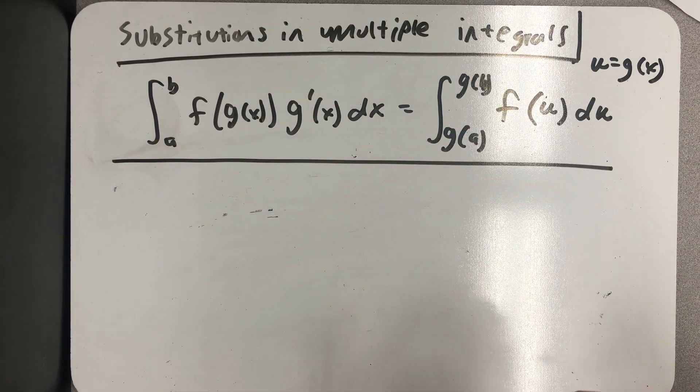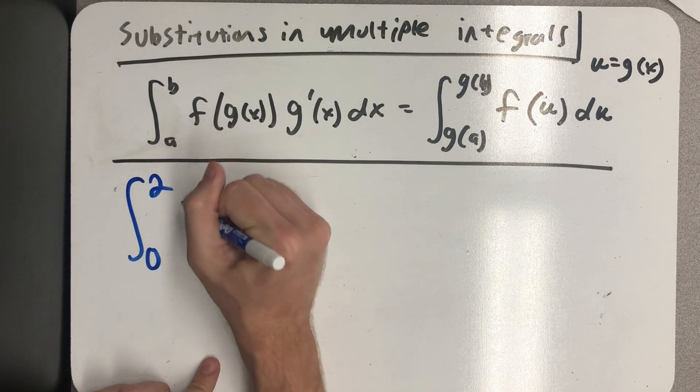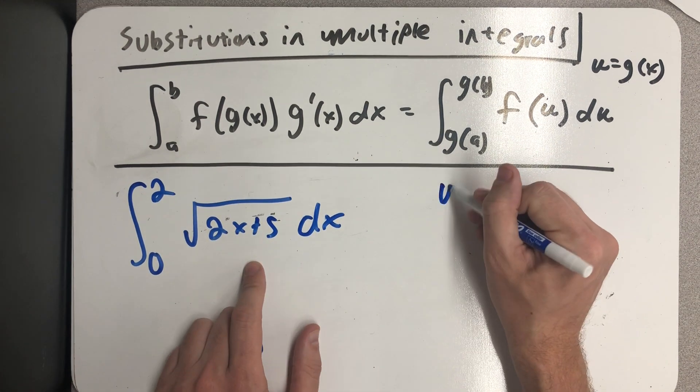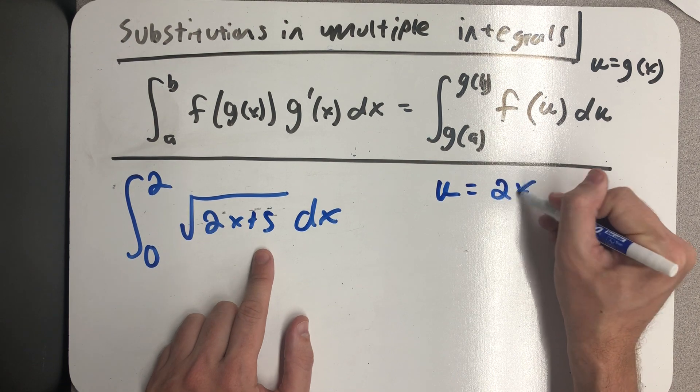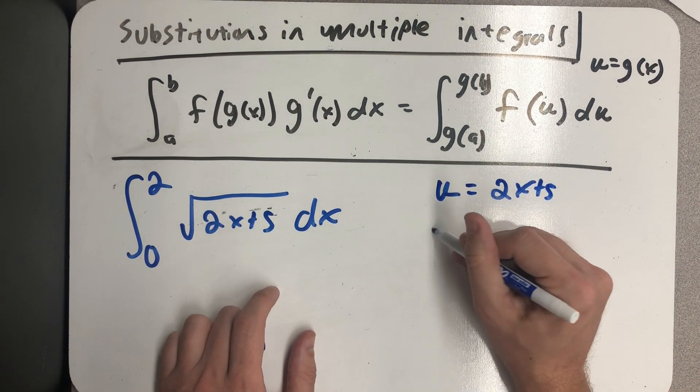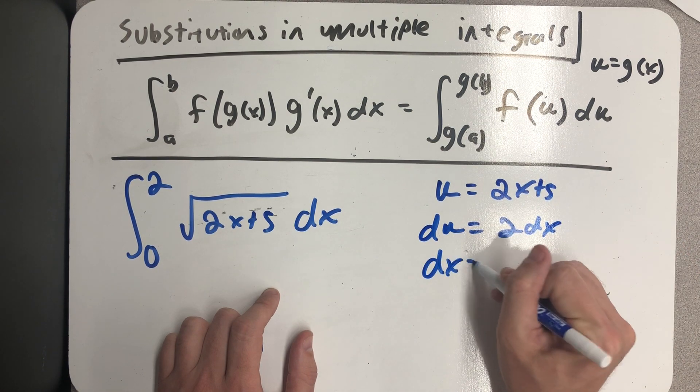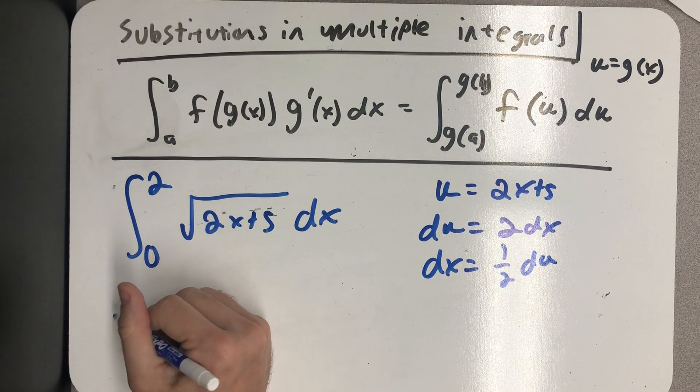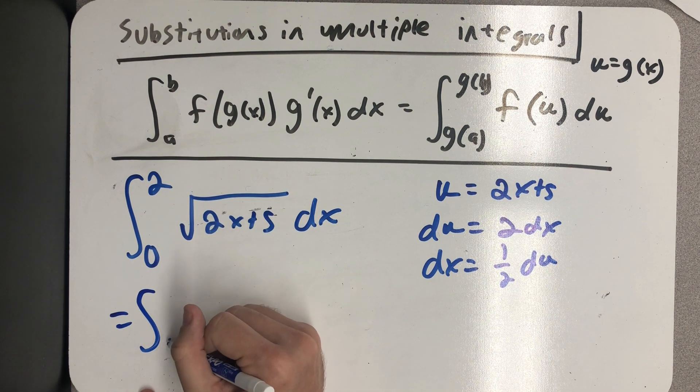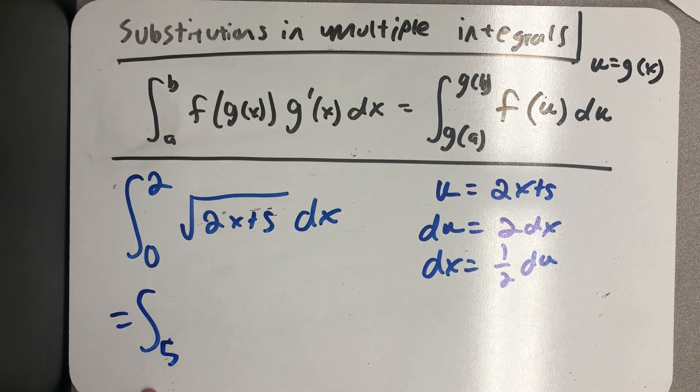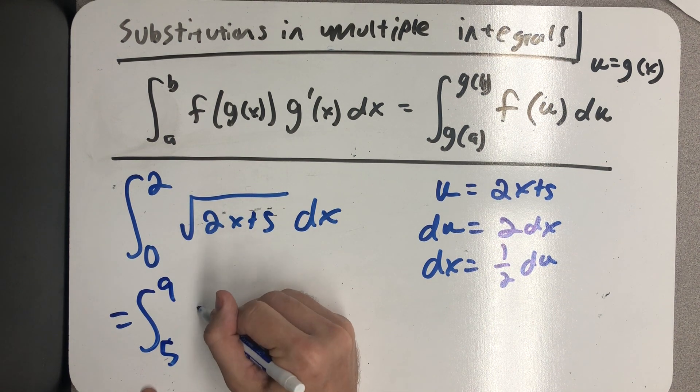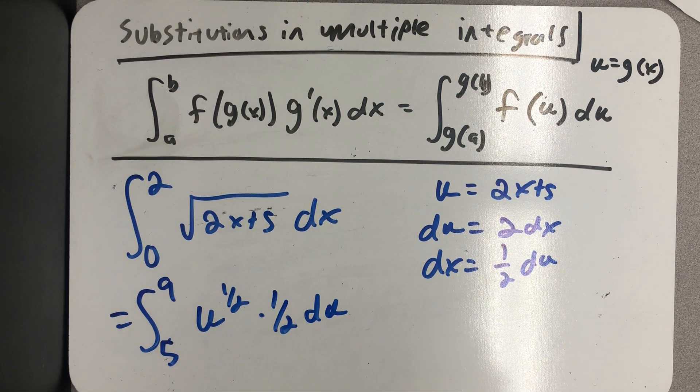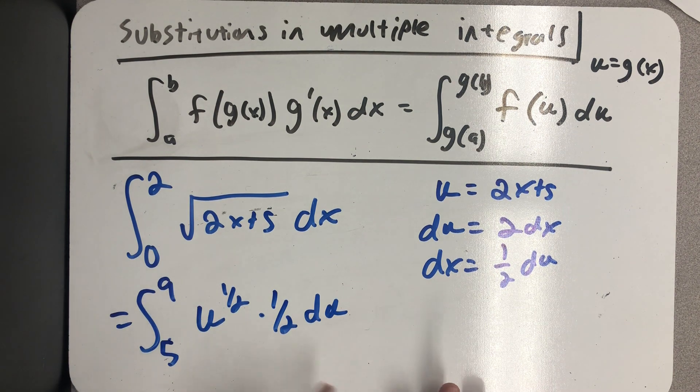We saw something that looked a little bit more like this, where we definitely saw an inside function whose derivative is not sitting on the outside, but we went on and just said, yeah, let's try it and see what happens. And we just managed to change things around until we could do our substitution anyway. And so I'm still plugging my old bounds into this function to get my new bounds. And then I evaluate this.